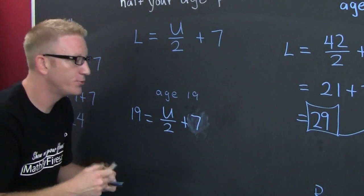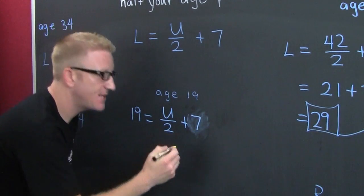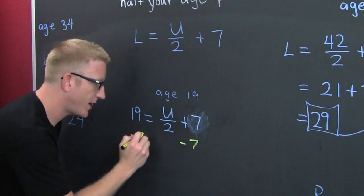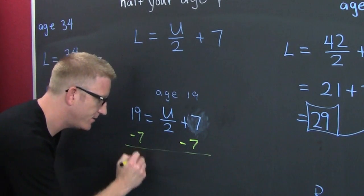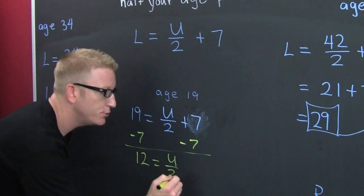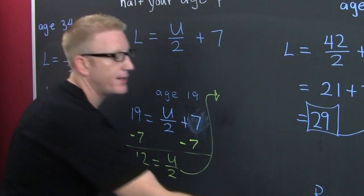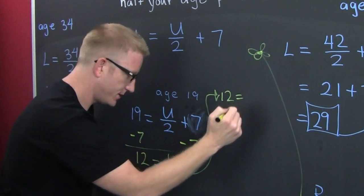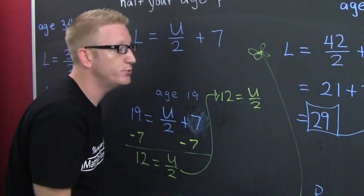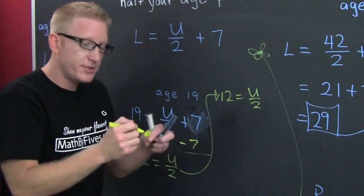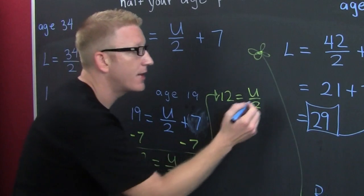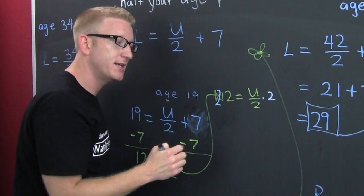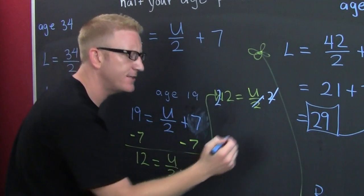We're looking for the upper age if you were 19 and you were trying to date somebody older. What do you do? You first get rid of that 7, you undo the addition before you undo the division. You subtract 7 off each side, and you're left with on the left side 12, and that's U over 2. So then I have 12 is equal to U over 2. Now what do you do to solve that? You undo the division with a little bit of multiplication. What you do on one side you must also do on the other. Multiply both sides by 2.